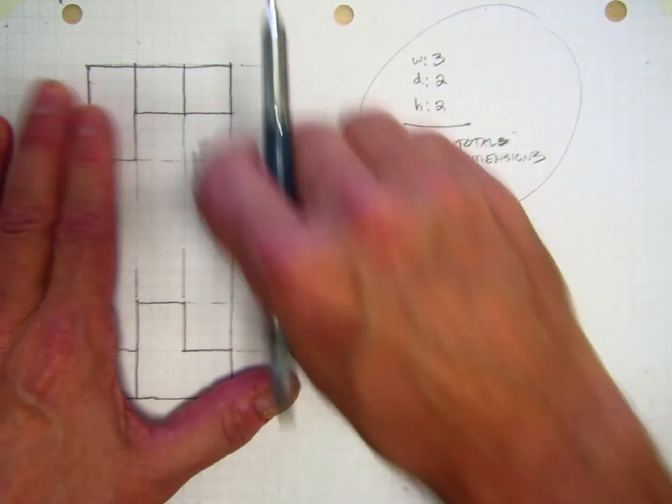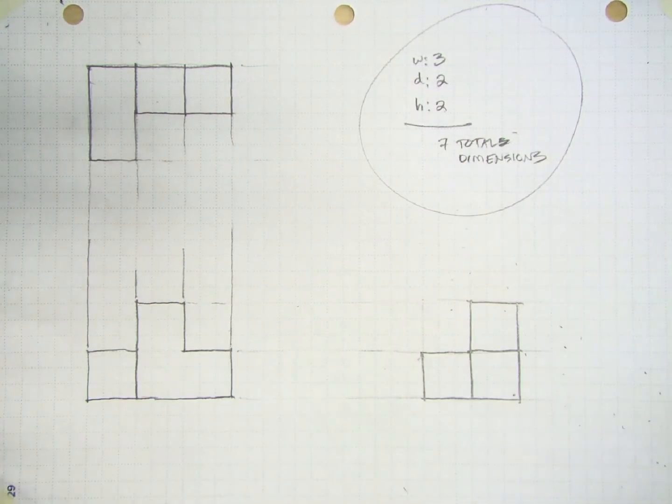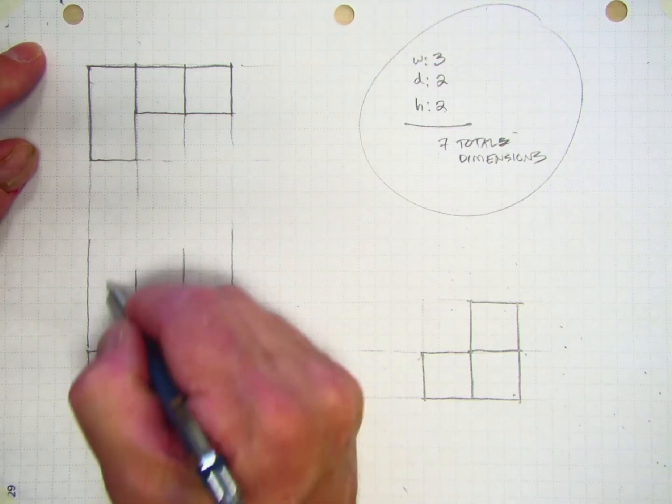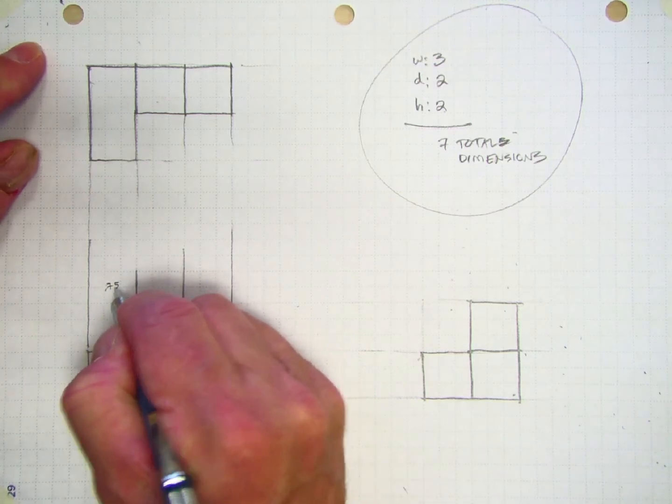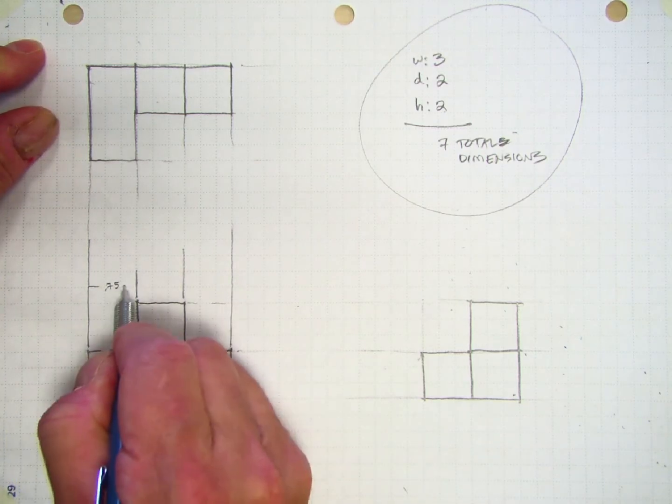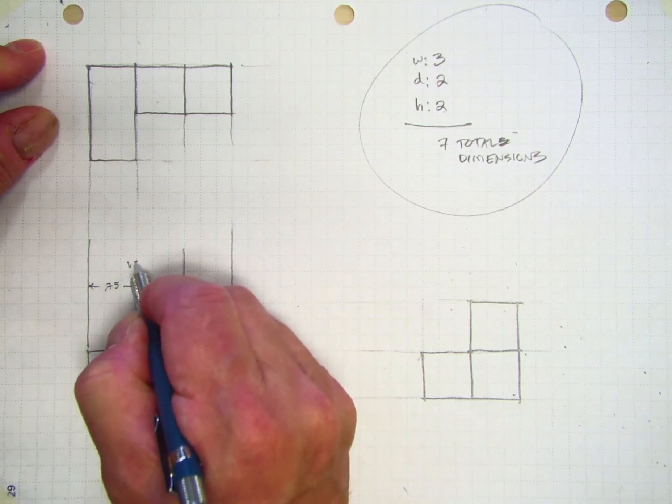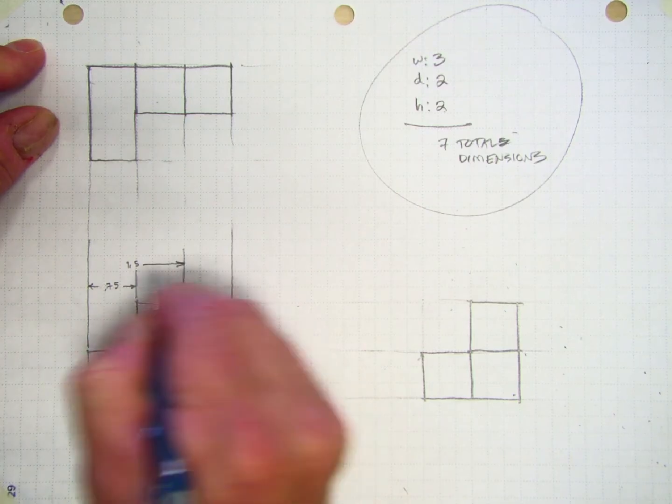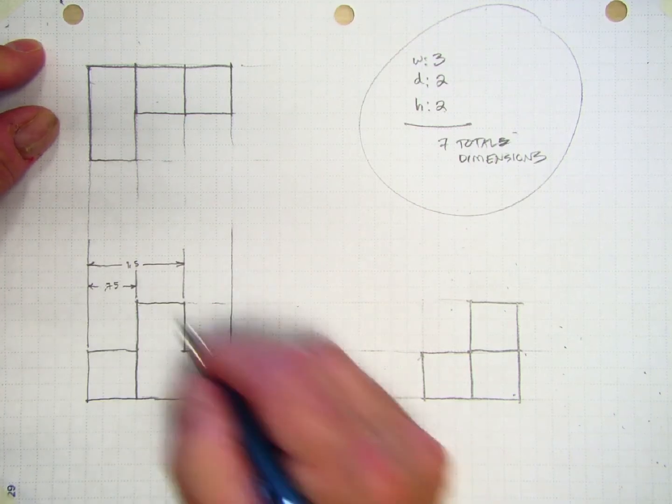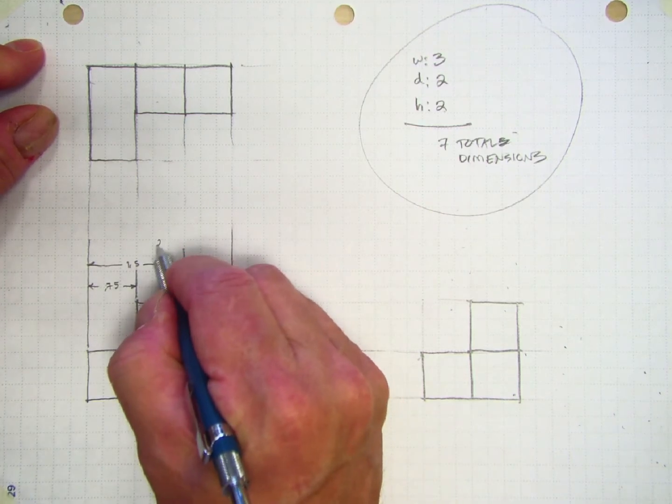We've already looked at the list of dimensioning guidelines, so we know that this dimension is 0.75. It's going to go from here to there, put your little arrowheads in there. This dimension is two of those, so it's 1.5, and then the overall width is three cubes, which is 2.25.